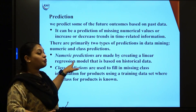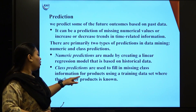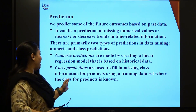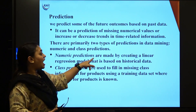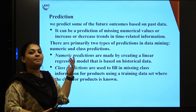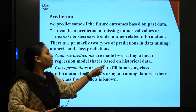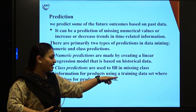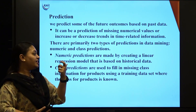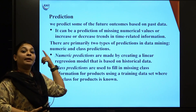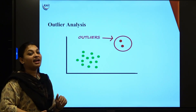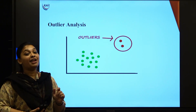There are two types of predictions: numeric prediction and class prediction. In numeric prediction we use regression. In class prediction, you take missing class information and, using a training data set where the class is known, fill in that missing information. Numeric predictions are made by creating a linear regression model based on historical data. Class predictions fill in missing class information using a training data set where the class for a product is known.